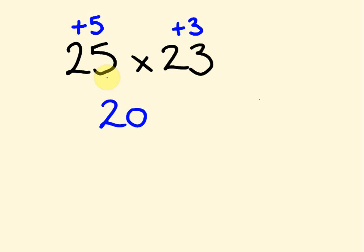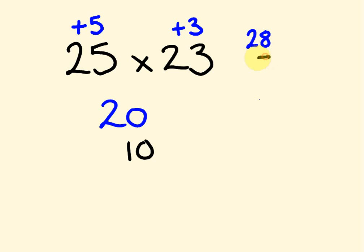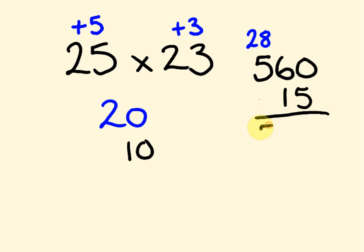We do the cross addition: 25 plus 3, or 23 plus 5, gives 28. Because we're using base 20 — which is 2 times base 10 — we double our answer: 28 times 2 is 56, so the first part of the answer is 560. Then we multiply the deviations: 5 times 3 is 15. Adding: 560 plus 15 gives 575.